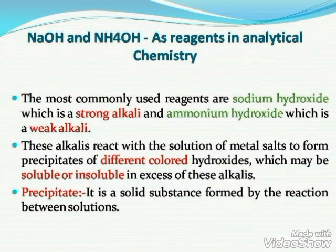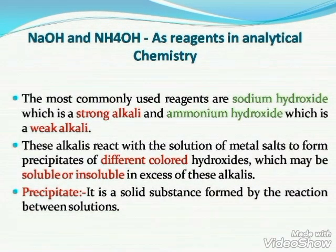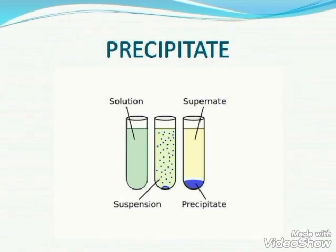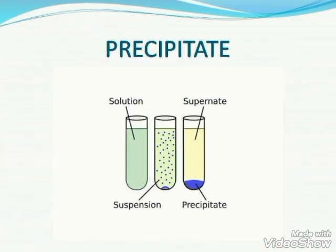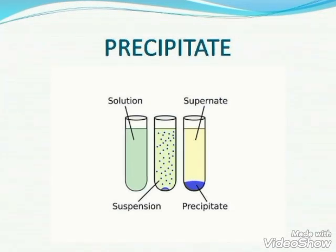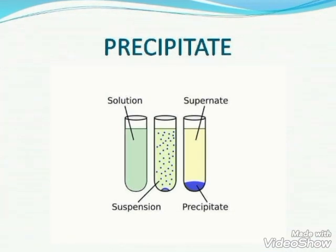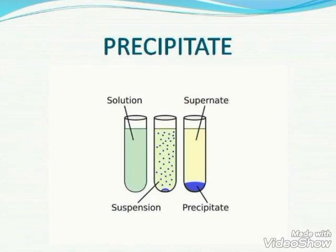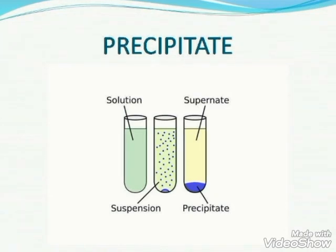A precipitate is generally a solid substance formed by the reaction between two solutions. In the diagram you can see three test tubes: one with a clear solution, one with particles suspended in it called a suspension, and a third where the upper part is a clear supernatant solution and at the lower part there is a blue precipitate settling down at the base. By seeing the color of this precipitate, we can identify what compound is present in that particular solution.